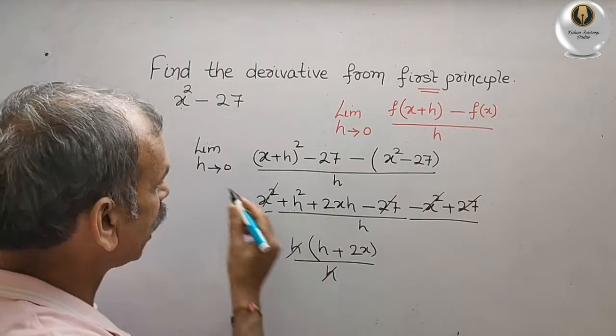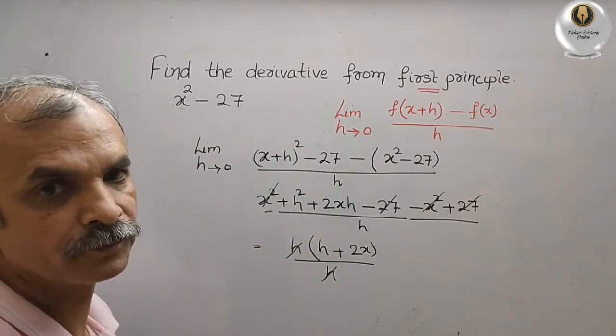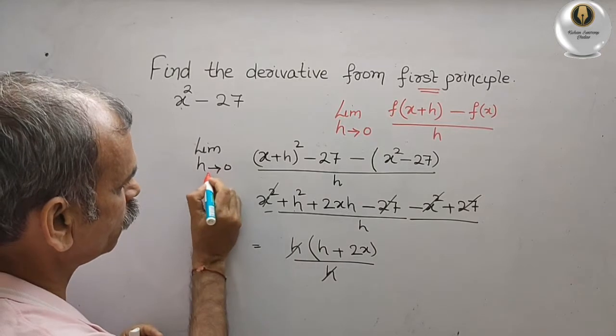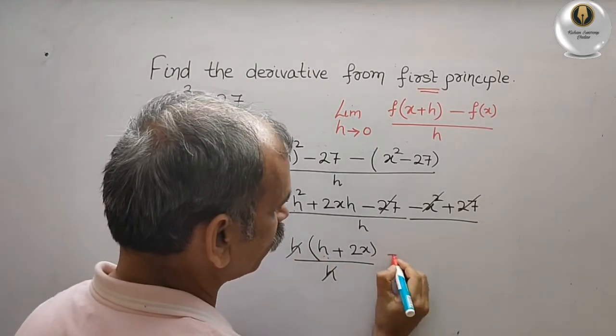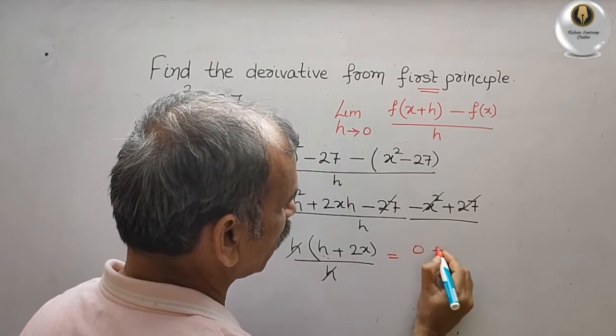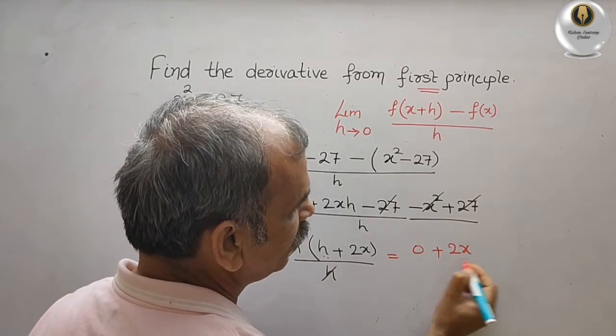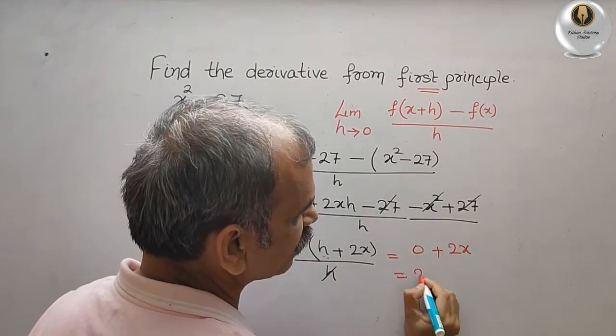Now substitute this value: h is equal to 0. Here we will get 0 plus 2x. Therefore, our answer is 2x.